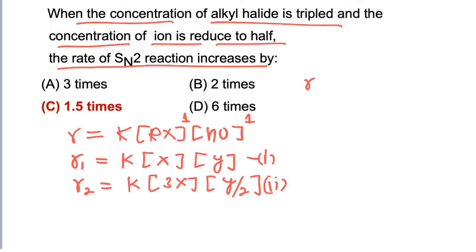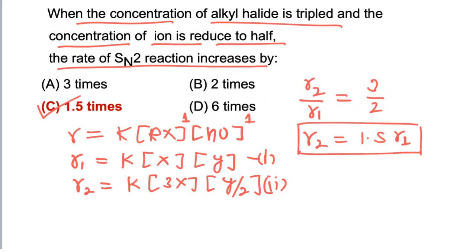If we divide equation 2 by equation 1, R2/R1 equals 3/2, so R2 equals 1.5 R1. The rate of reaction is now 1.5 times the initial rate, and hence the rate increases by 1.5 times. The correct answer is C.